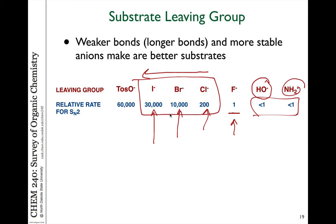There are leaving groups that are better than the halogens, such as a tosylate group. We're not going to focus too much on tosylates, but I just want to mention that other kinds of leaving groups can also be utilized for substitution reactions besides just the halogens.